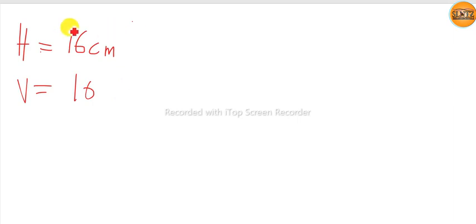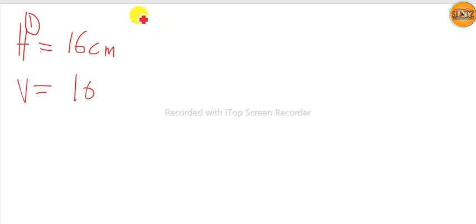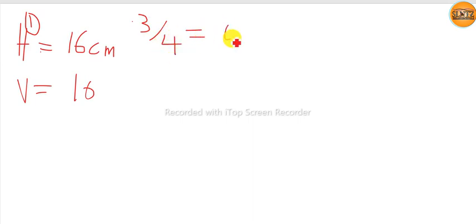That is the first step. The second step: we need to know three-quarter. Three-quarter means three over four, which equals 0.75.